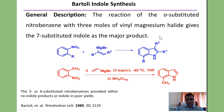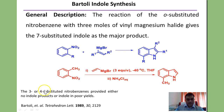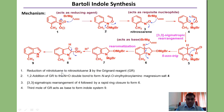Bartoli indole synthesis is a very meticulous synthesis of indole involving the reaction of ortho-nitrotoluene with vinylmagnesium bromide to form a 7-substituted indole. The CH3 group is not taking part in the reaction — cyclization occurs on the other side, giving a 7-substituted indole. It is observed that 3- or 4-substituted nitrobenzene provides either no indole products or indole in poor yields. This reaction is particularly successful when the ortho-position is blocked in nitrobenzene.